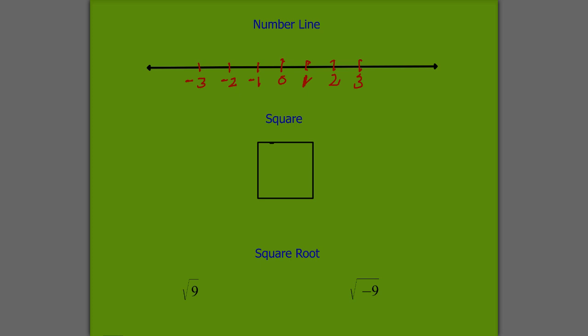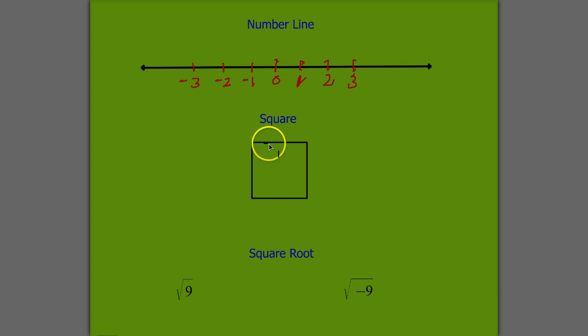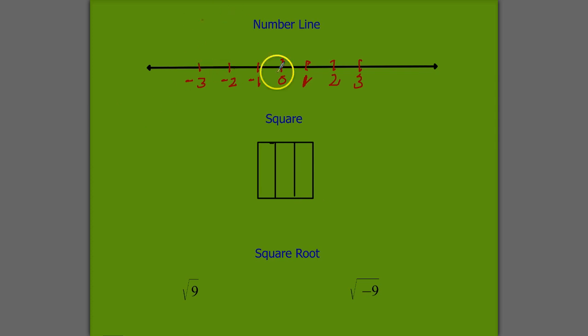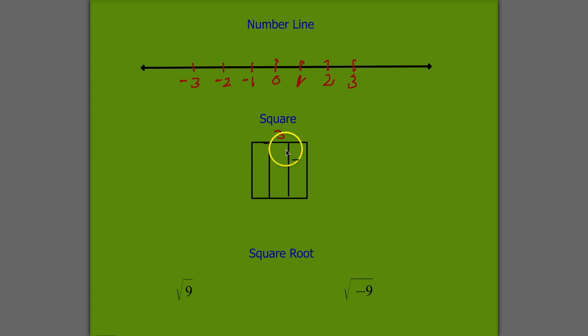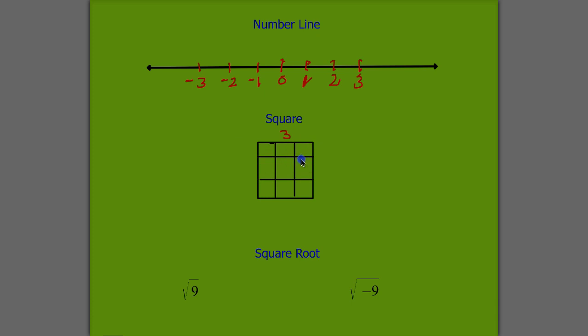But when you start looking into the idea of a square, things become a little bit more complicated. So I have a square here. And let's just say that there are sides of 3. I have a side value of 3 right here. 1, 2, 3. And on the other side of it, we'll have another one. So lie to yourself and pretend those are 1 by 1 squares. So now that we have a 3 by 3...